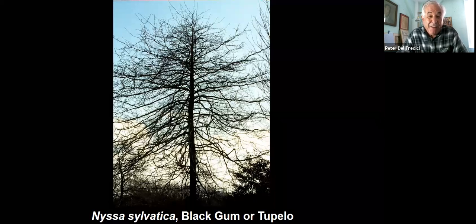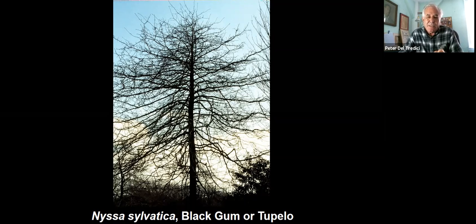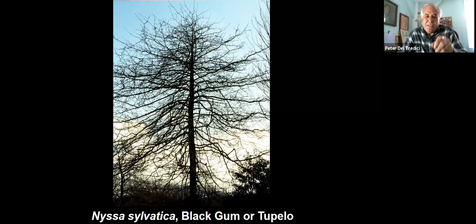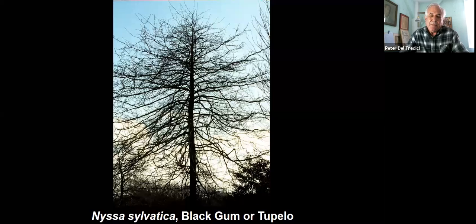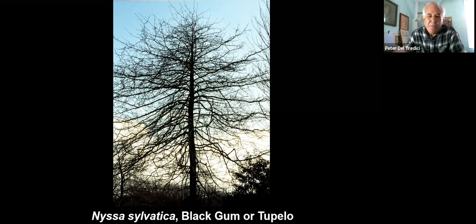This is the tupelo, the black gum, which is always easy to recognize in the landscape because it has a single trunk carried all the way up to the very top of the tree, and the branches are fully horizontal in relation to that vertical trunk. The pin oak has a very similar form — I'd give you partial credit for that answer.